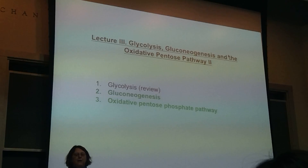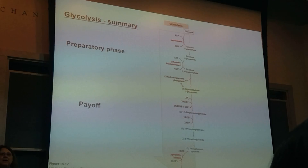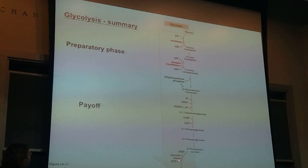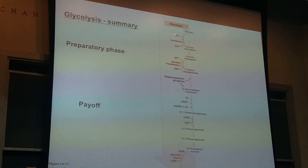So we're moving into gluconeogenesis. For glycolysis, we have glucose going down to two pyruvate. We have the preparatory phase and then the payoff phase where we generate ATP. There are three irreversible reactions — they all have very negative delta G's — and they all use ATP: hexokinase, phosphofructokinase-1, and pyruvate kinase.